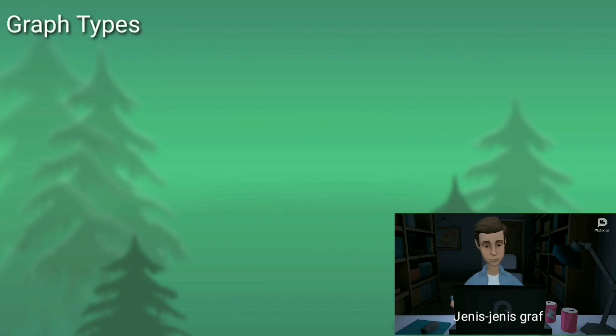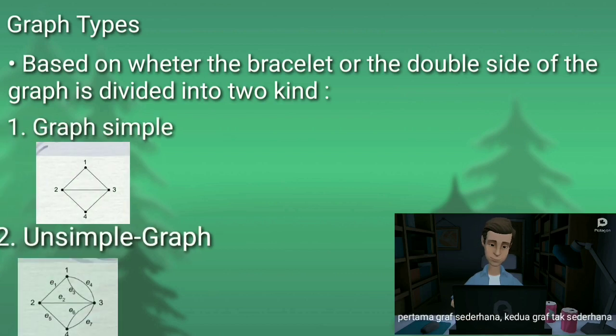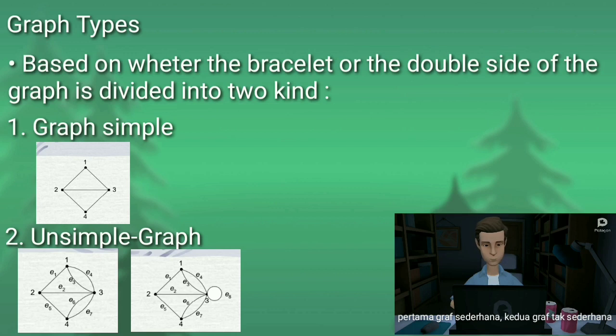Graph types: Based on whether there are loop edges or double sides, the graph is divided into two kinds. First, simple graph, and second, unsimple graph.